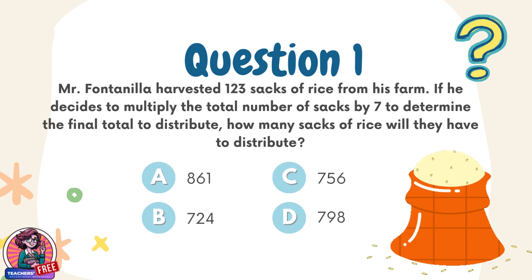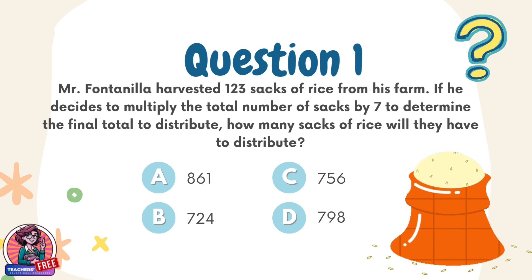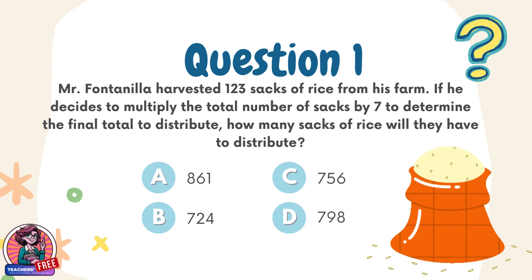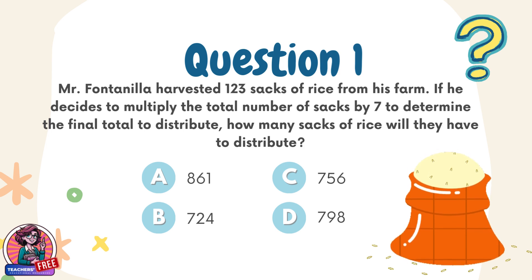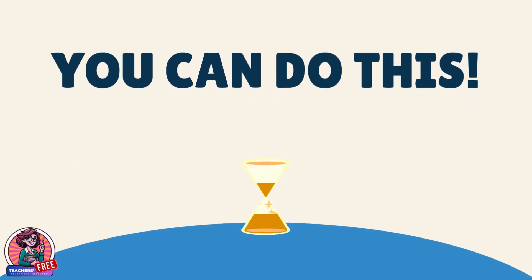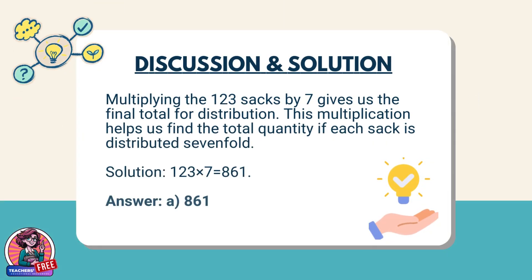Question 1. Mr. Fontaniller harvested 123 sacks of rice from his farm. If he decides to multiply the total number of sacks by 7 to determine the final total to distribute, how many sacks of rice will they have to distribute? Choices: A. 861, B. 724, C. 756, D. 798. Discussion: Multiplying the 123 sacks by 7 gives us the final total for distribution. This multiplication helps us find the total quantity if each sack is distributed sevenfold.